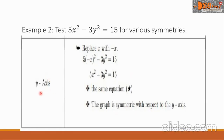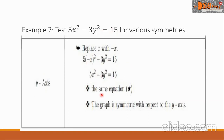Going to the test for y-axis symmetry, we replace x with negative x. The 5x² becomes 5 times the square of negative x, then minus 3y² stays the same, equals 15. Simplifying: 5 times the square of negative x is positive x², minus 3y² is the same, equals 15. Comparing this equation with our original, we can observe they are the same, so we say the graph is symmetric with respect to the y-axis.